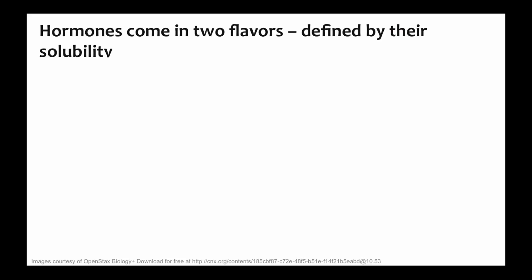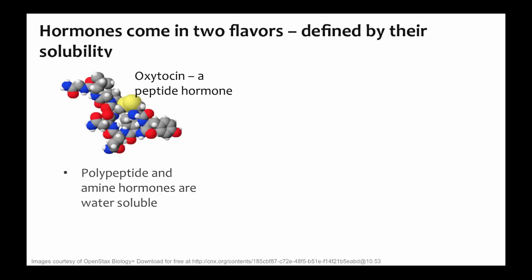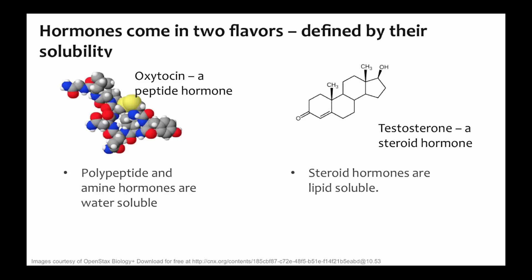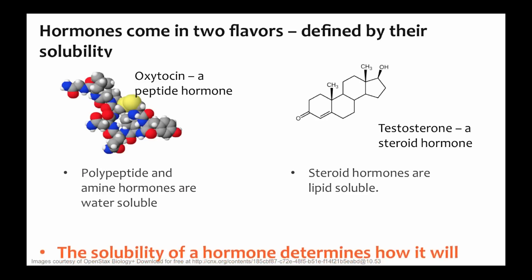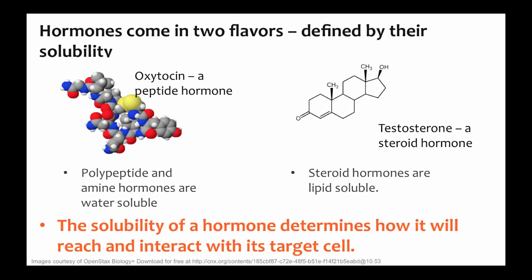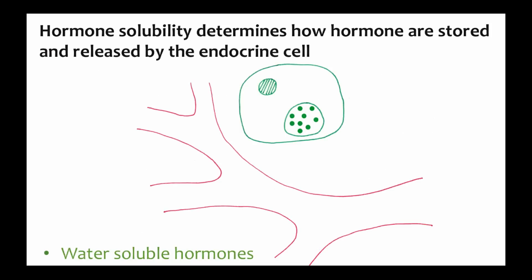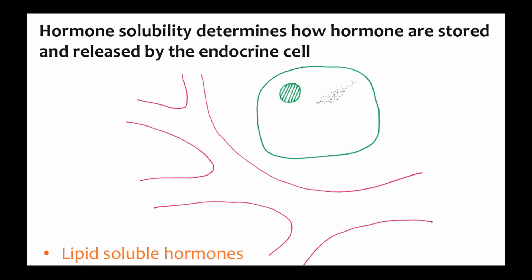Hormones come in two flavors — we classify hormones based on their solubility. Some hormones are soluble in water; these hormones are composed of amino acids and small peptides. The other class of hormones are lipid soluble; these hormones are often synthesized from cholesterol and can dissolve in the lipid bilayers. Peptide hormones are synthesized and stored in secretory vesicles within the cell, until the endocrine cell is stimulated to release them. But lipid soluble hormones can't be stored in secretory vessels — they would just diffuse across the vesicle membrane. So when an endocrine cell is stimulated to release steroid hormones, they have to synthesize them and then the hormone can diffuse out of the cell.